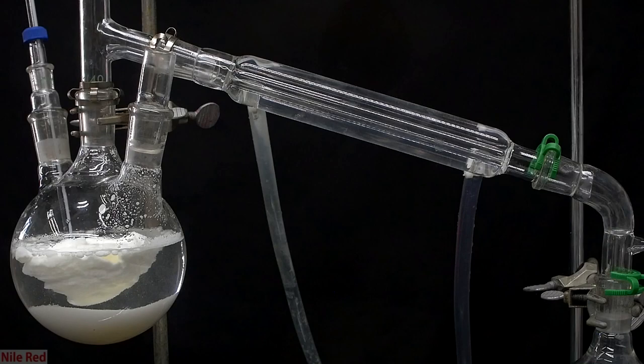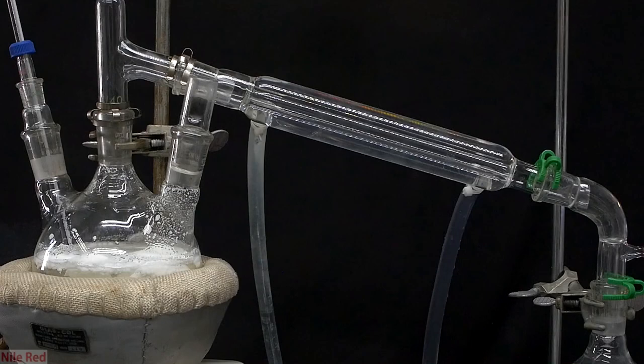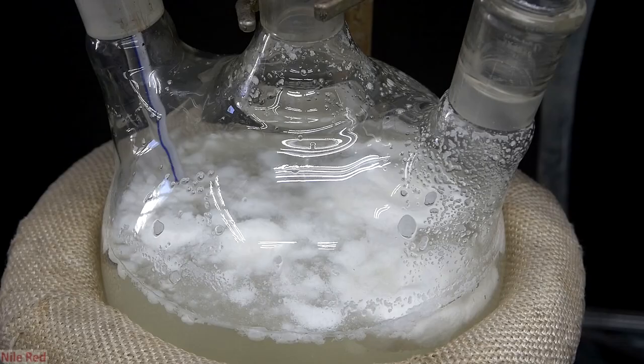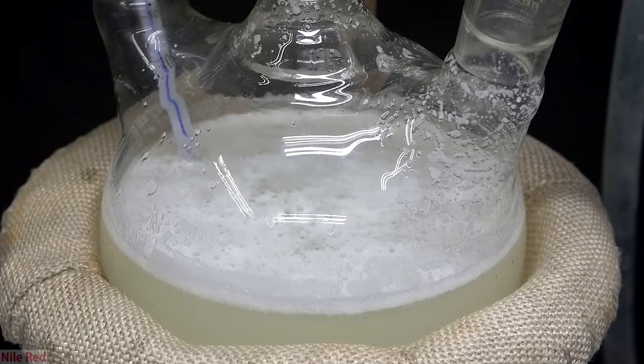So this is what our distillation setup looks like, and you should note that every joint has been thoroughly greased, because we will need to carry out a vacuum distillation. Once we're ready to get things going, we place a heating mantle below the flask, and we turn it on. Initially, there's going to be way too much ammonium chloride to stir anything, and we're going to have to wait until things heat up a little bit, and the ammonium chloride starts to dissolve.